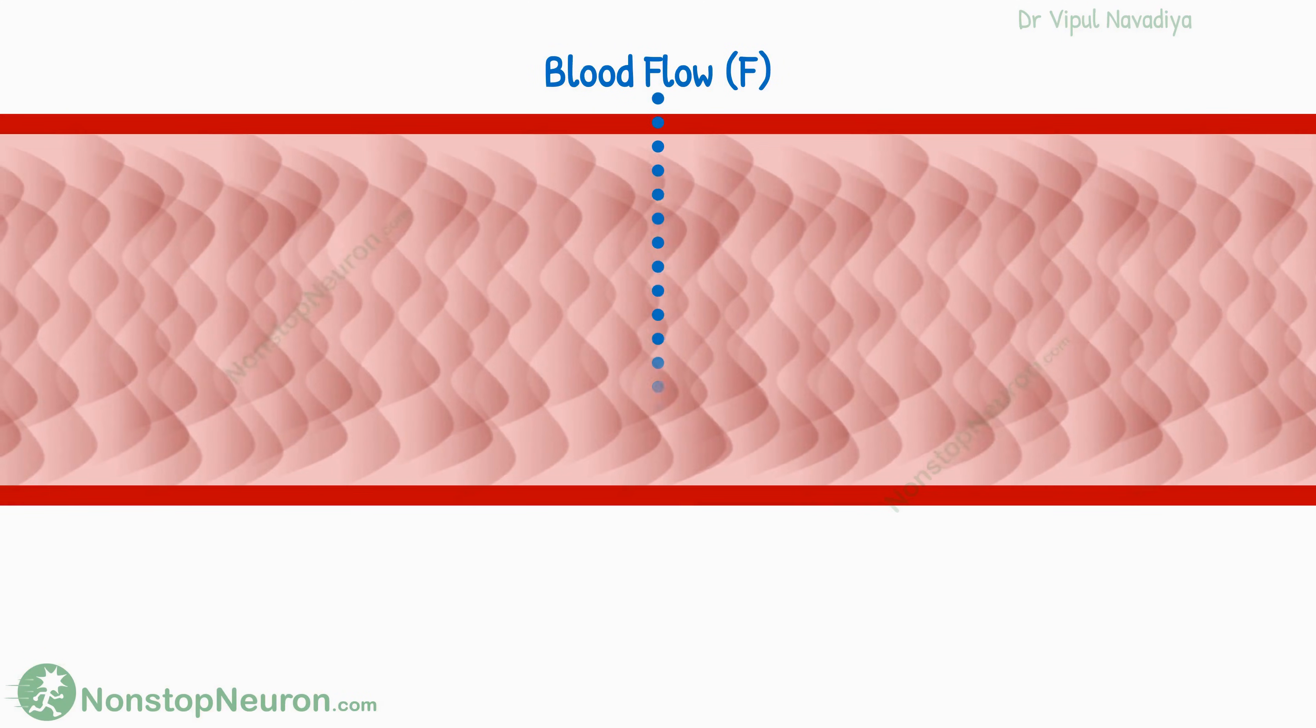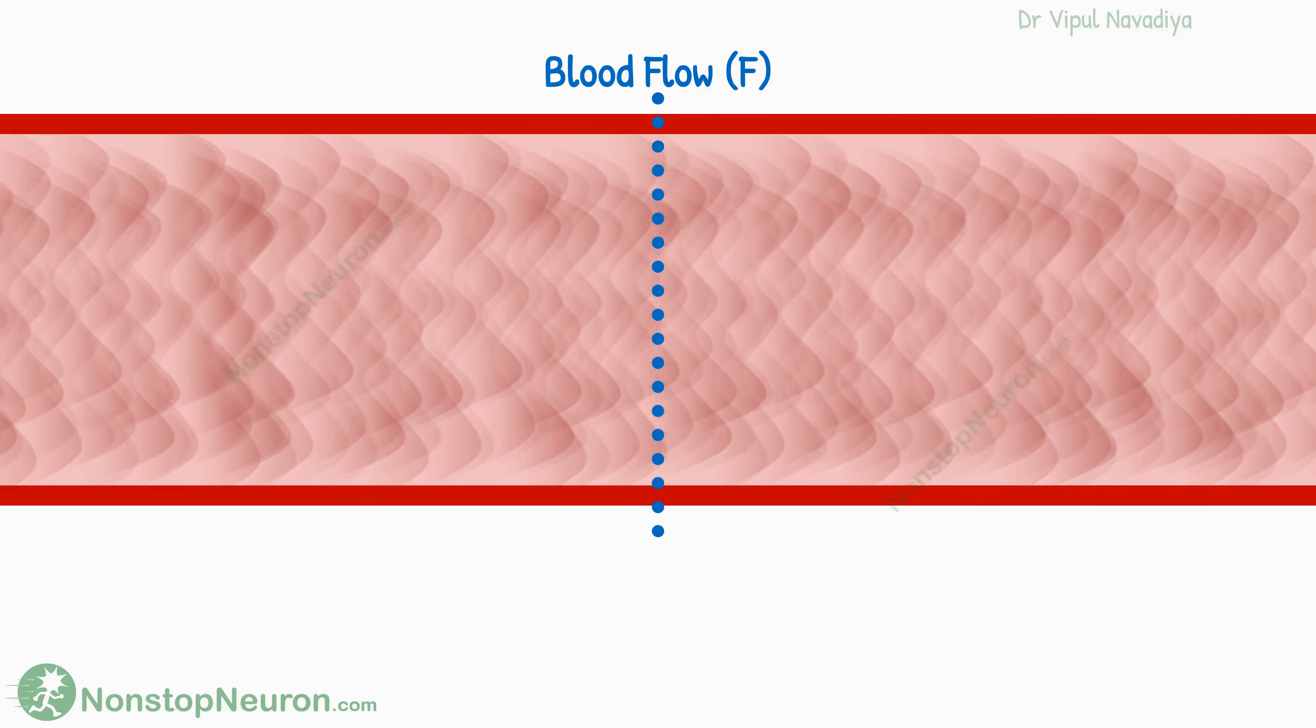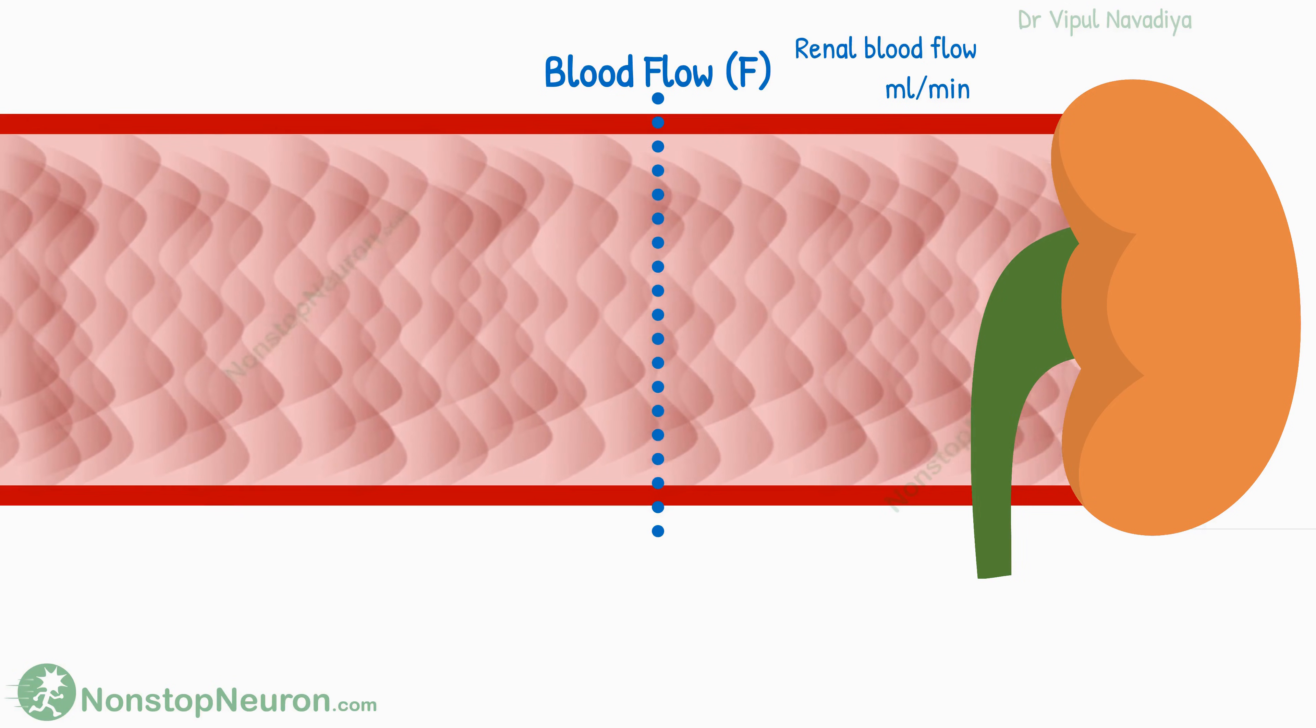First, let's quickly revise what each one of these is. Blood flow is the total quantity of blood that passes through a given point in circulation in a given period. For example, blood flow to the kidneys is a thousand milliliters per minute.